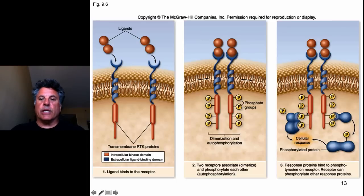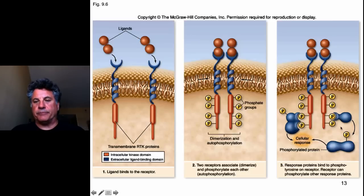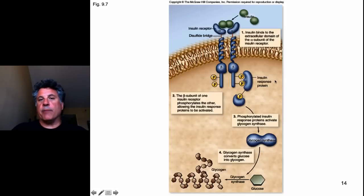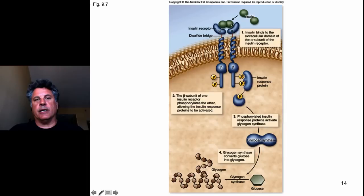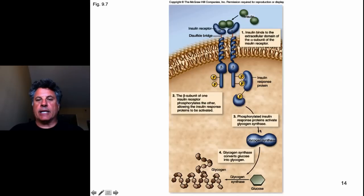That phosphorylation event activates other proteins as well — these kinases not only phosphorylate themselves, but also phosphorylate target proteins and activate them. For example, in the insulin receptor in liver cells, which is a receptor tyrosine kinase, when insulin is bound by the alpha subunits, dimerization occurs and the beta subunits autophosphorylate and also phosphorylate an insulin response protein. When that insulin response protein is phosphorylated, it activates an enzyme called glycogen synthase, but only when it is phosphorylated.